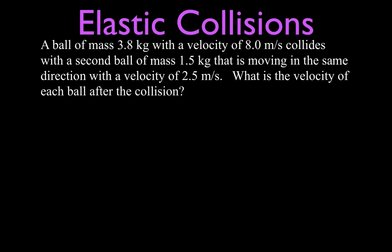This is the situation where we have two masses. We have a ball with a mass of 3.8 kilograms moving with a velocity of 8.0 meters per second. It collides with a second ball with a mass of 1.5 kilograms that's moving in the same direction with a velocity of 2.5 meters per second. I'm going to take this as a perfectly elastic collision. We want to know what is the velocity of each of the balls after the collision.